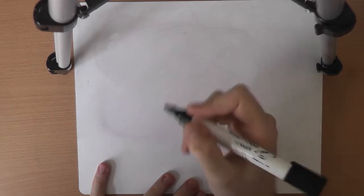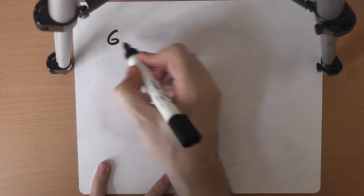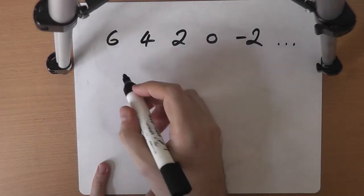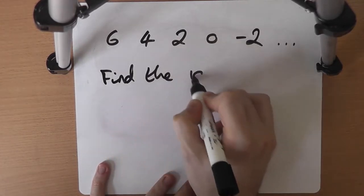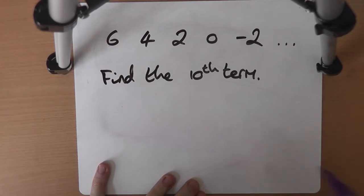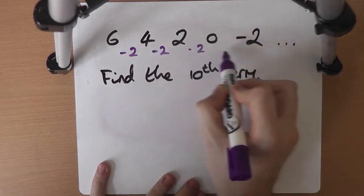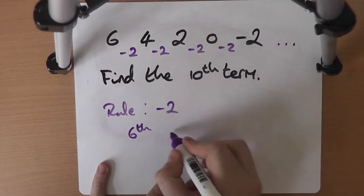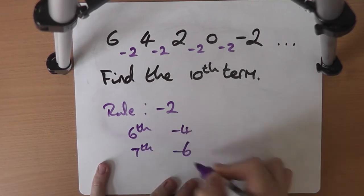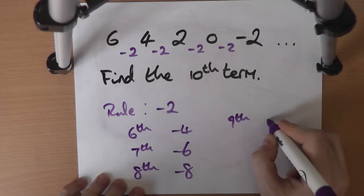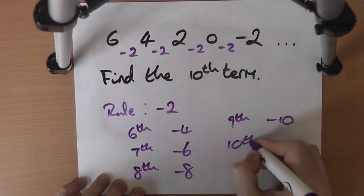We can even use sequences and number patterns to find numbers later on — to find later terms in the sequence. If we started with something like 6, 4, 2, 0, minus 2 — a perfectly good sequence that carries on — we might want to find the 10th term. We've already got 5 terms, so we're halfway there. The rule is we're taking away 2 each time. So the 6th term will be minus 4, the 7th term minus 6, the 8th term minus 8, the 9th term minus 10, and the 10th term will be minus 12.